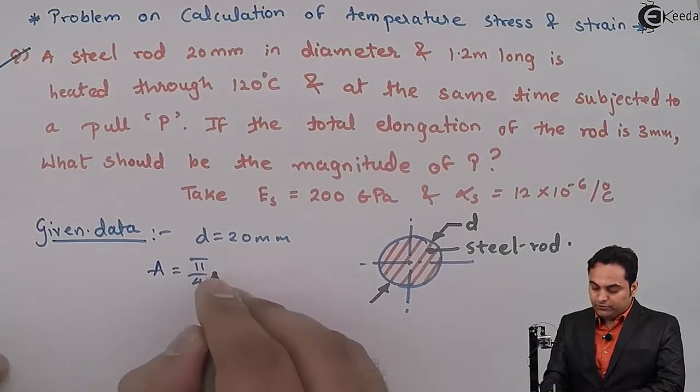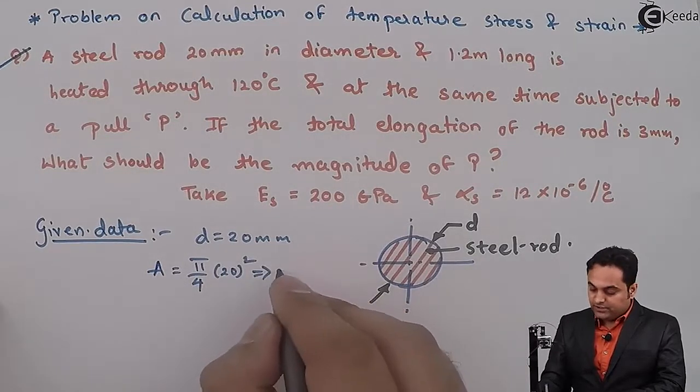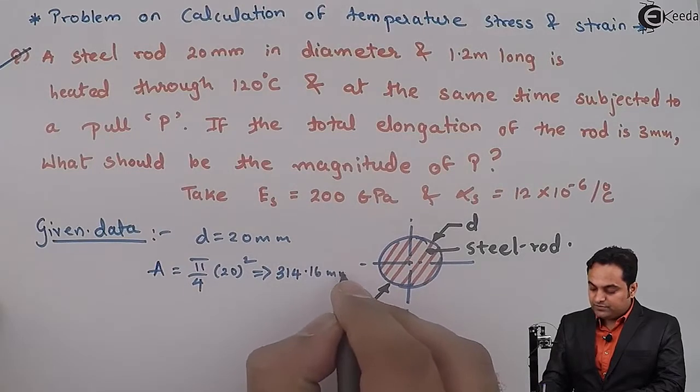So pi by 4 into 20 square and that is 314.16 mm square.